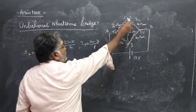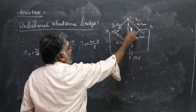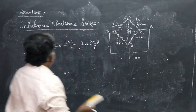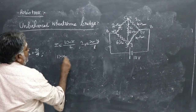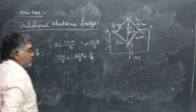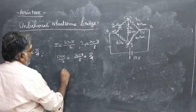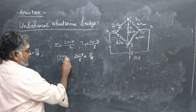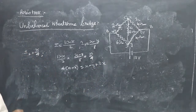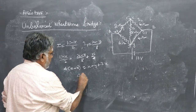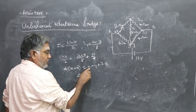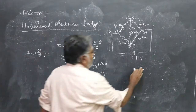Applying KCL at node C: the incoming current I equals I₁ + I₂, so (10 − X)/2 = (X − Y)/8 + X/4. Multiplying throughout by 8 gives: 4(10 − X) = (X − Y) + 2X, which simplifies to 40 − 4X = X − Y + 2X, and therefore 40 = 7X − Y. This is Equation 1.